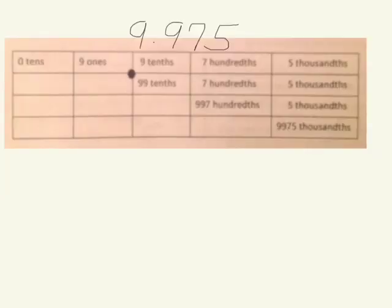Now let's use this process with a decimal. We have nine and nine hundred seventy-five thousandths (9.975). Decomposed: 9 ones, 9 tenths, 7 hundredths, 5 thousandths. Or 99 tenths, 7 hundredths, 5 thousandths. Or 997 hundredths, 5 thousandths.